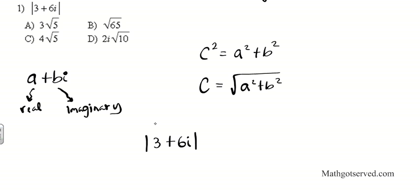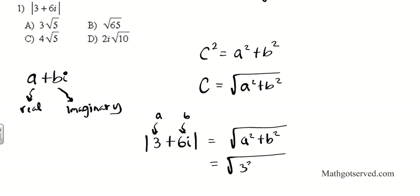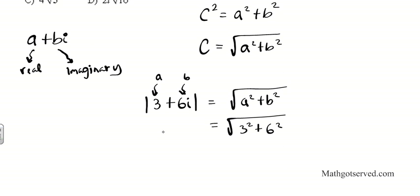If you examine this complex number, the first number is the real part a and the coefficient of i is b. So the absolute value is simply going to be the square root of a squared plus b squared. That gives us the square root of 3 squared plus 6 squared. Remember, you do not take the i along — if you include i it will switch the sign and you will get the wrong answer.